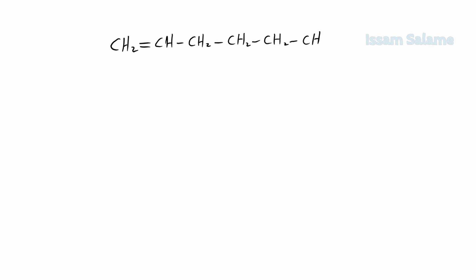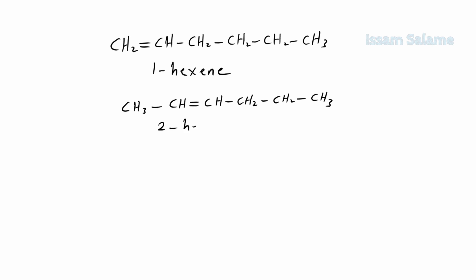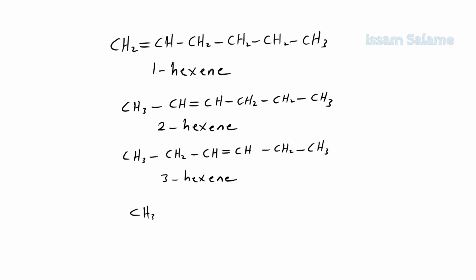With a double bond at the first carbon like this, we call it 1-hexene. The double bond can be at the second carbon like this, and we call it 2-hexene. It can be at the third carbon like this, and we call it 3-hexene.